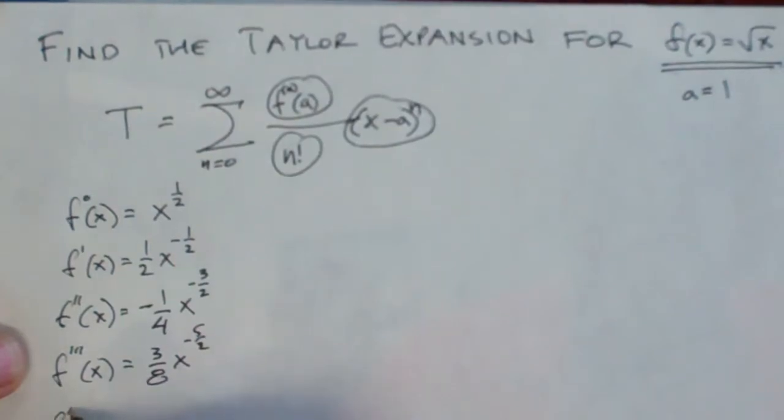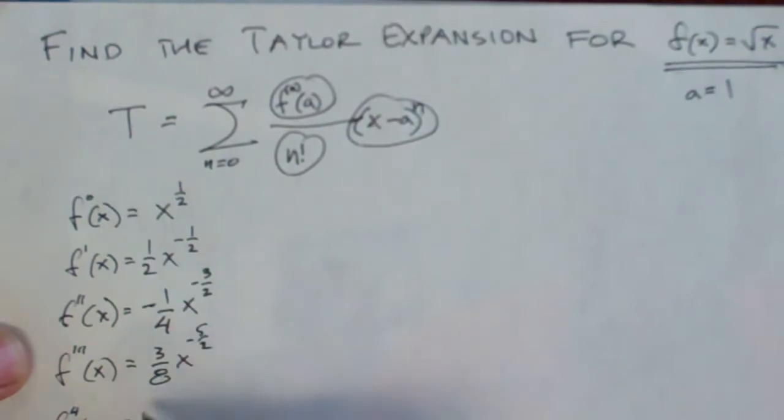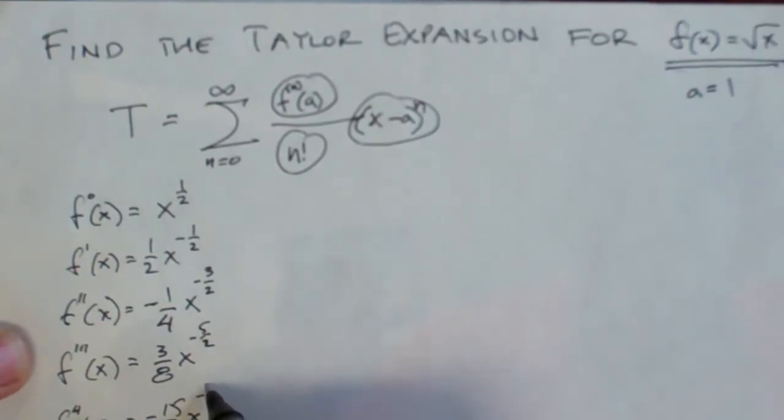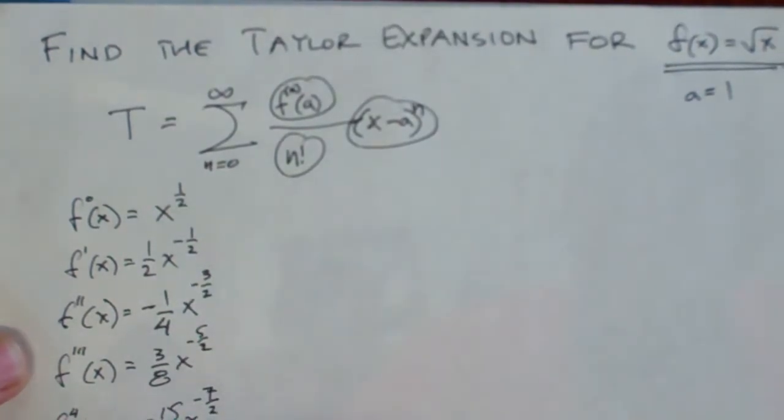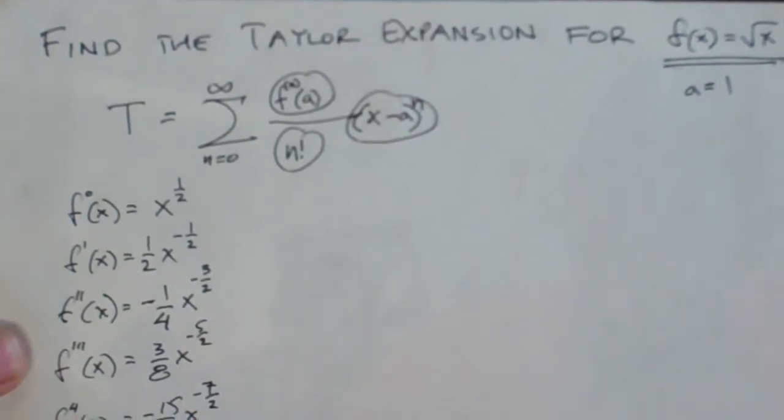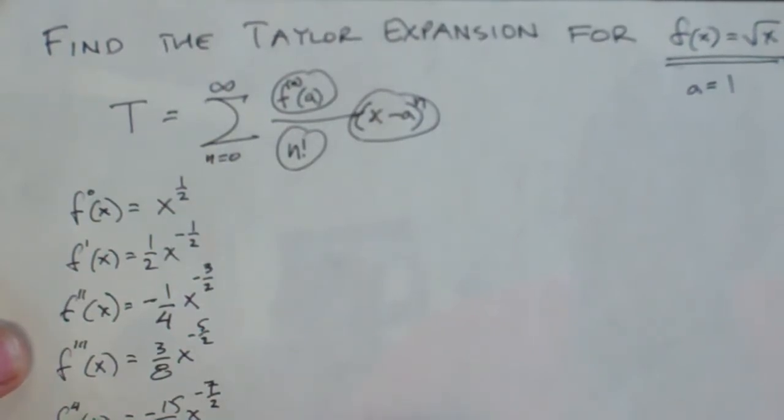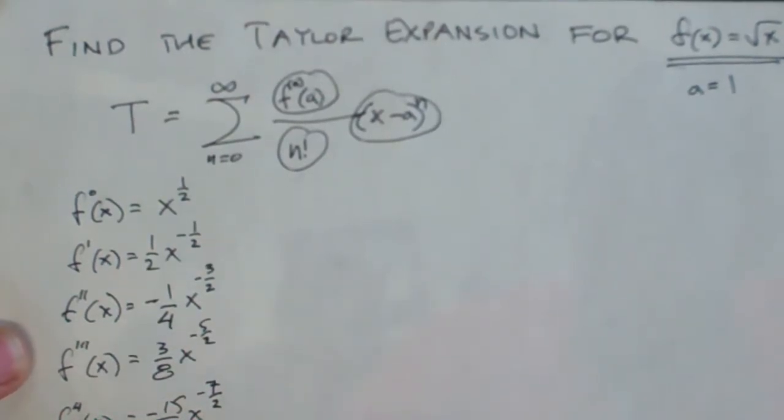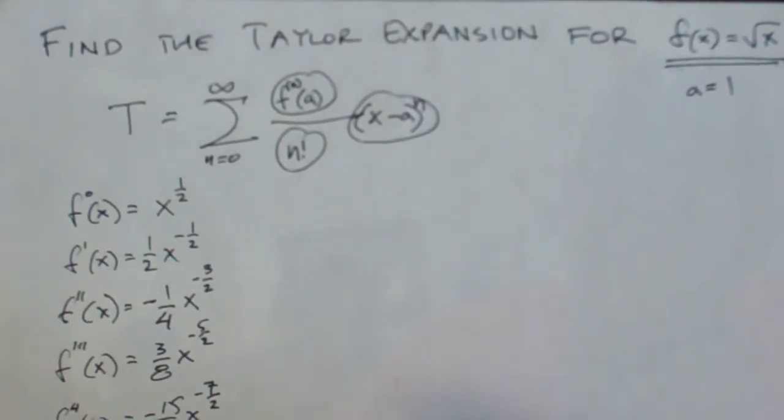And then the fourth derivative. I'm going to start writing a little 4 there. Of x equals. Multiply that in. I'm going to get 15. Negative 15 over 16. x to the minus 7 over 2. So when do you stop? I don't know. That might be sensible. But this is so much fun. I'm just going to do it one more step. And it is going to be. Okay. So that's going to be negative times a negative is a positive. 105 over 32 x to the minus 9 halves. Alright. So that's a good start.